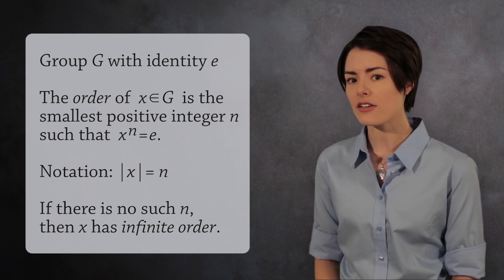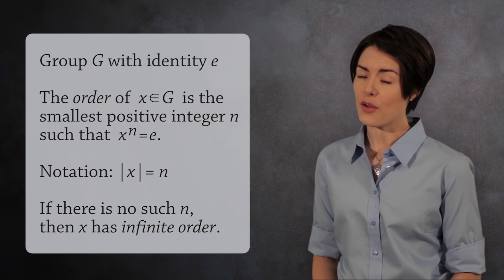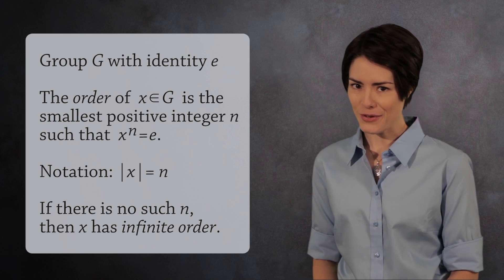If there is no positive power of x which gives you the identity element, then we say x has infinite order. Let's see a few examples.